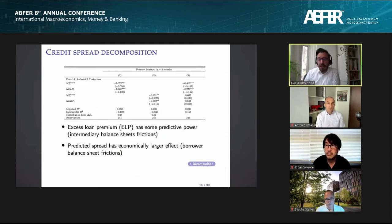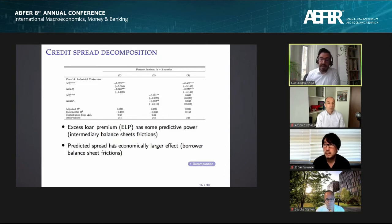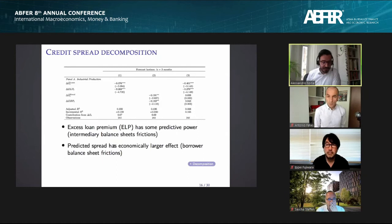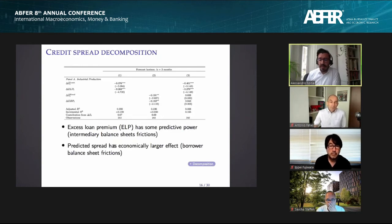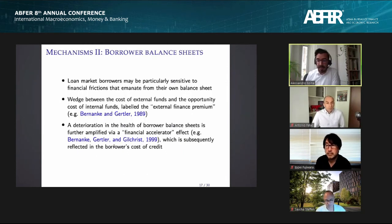We apply the same credit spread decomposition as Gilchrist and Zakrasek, splitting the loan spread into a predicted component driven by borrower default risk and a residual excess loan premium capturing everything else, including intermediary balance sheet frictions. The excess loan premium is significant and has predictive power, consistent with the intermediary friction story. However, the predicted spread has an even larger effect — two-thirds of the incremental R-squared contribution comes from the predicted spread.